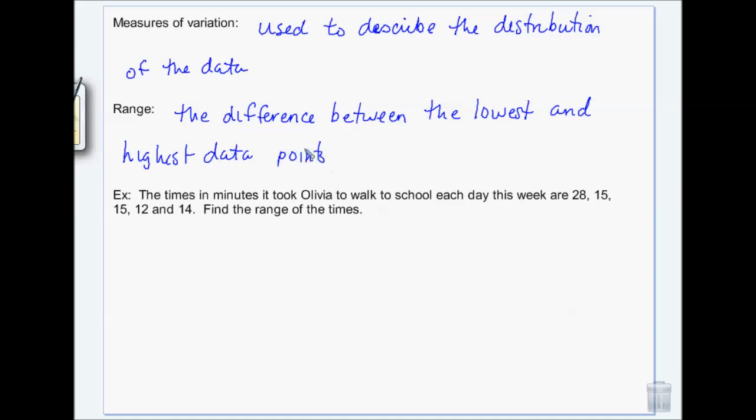So it tells us how far the data spreads out. So if Olivia is walking to school every day and she takes twenty-eight, fifteen, fifteen, twelve, and fourteen minutes to walk, we want to find the range. Twenty-eight is the largest. Twelve is the smallest. So her range is sixteen minutes.